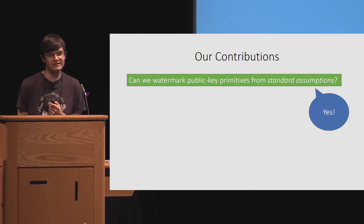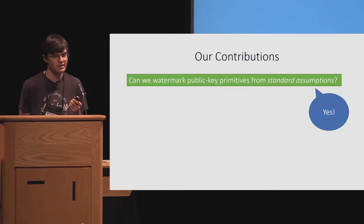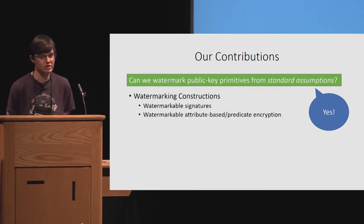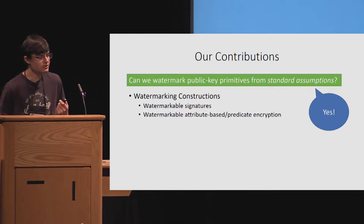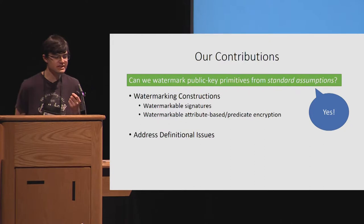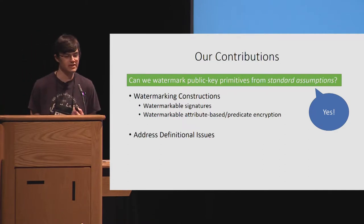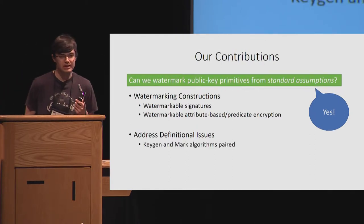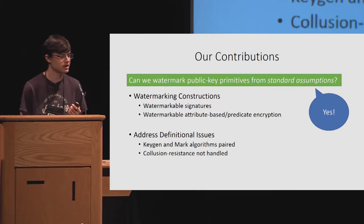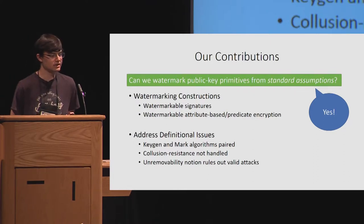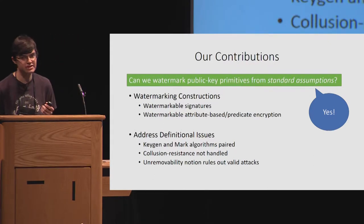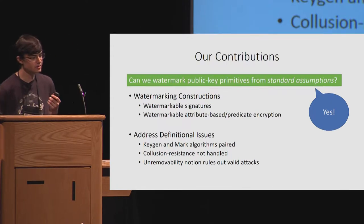In this work, we show the answer is yes, and in fact we can do this surprisingly simply. Our main contributions are watermarking constructions: we give watermarkable signatures and watermarkable attribute-based and predicate encryption. But our other contribution comes on the definitional side. The existing definitions in the literature had some insufficiencies and issues, which we address in this work. Just to quickly state what some of these issues are: the keygen and mark algorithms were paired, collusion resistance was not handled, and the unremovability notion ruled out valid attacks — this last being the most devastating issue.